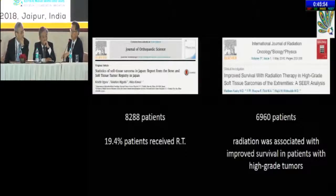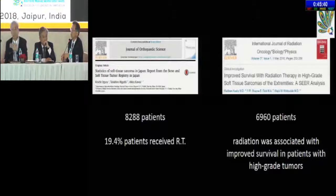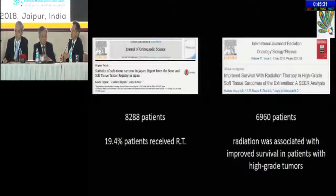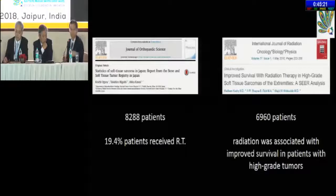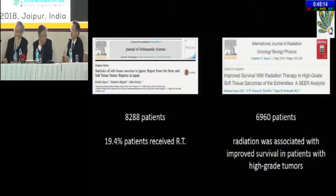Radiotherapy in Japan is only prescribed for patients who have a very large tumor, one that is very adjacent to the neurovascular bundle, or who has a very poor response to chemotherapy such as increasing size during treatment. Only those patients are treated with radiotherapy. Normally, patients are treated without radiotherapy. But in the case shown, where the nerve is very adjacent to the tumor, pre-operative radiotherapy would be preferred to save the nerve.